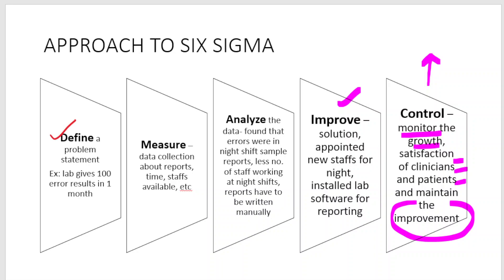So these are the different approaches to achieve Six Sigma. First, identify the problem; collect all statistical data pertaining to your problem; analyze the data; come up with a solution; in the Improve phase, implement the solution and record the outcome; and in the Control phase, monitor the growth, analyze clinician and patient satisfaction, and maintain the improvement.